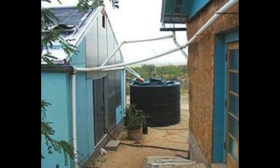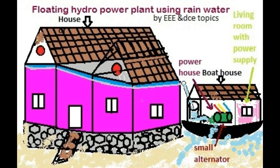We collect the water and the working process is carried out — power is generated. This power can also be given to the government by synchronizing with the distribution lines with the help of an online inverter. By this way, we get income from this boat house during the rainy season as well.